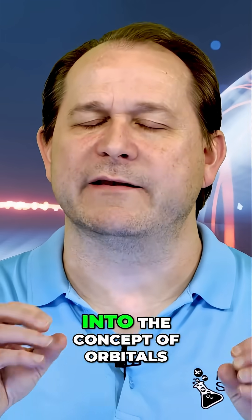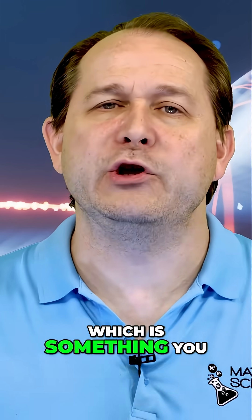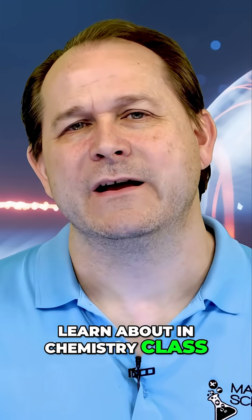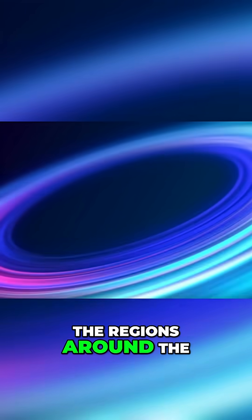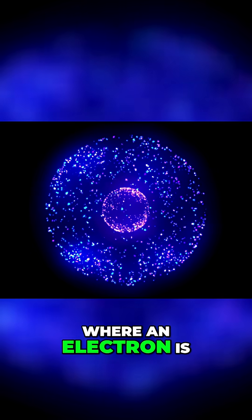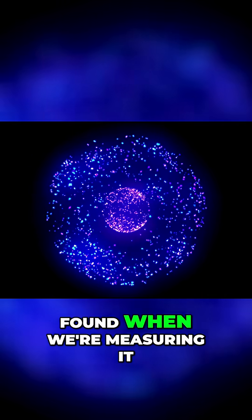I'd like to dig a little bit deeper into the concept of orbitals, which is something you learn about in chemistry class. So an orbital is just a representation of the regions around the nucleus of an atom where an electron is most likely to be found when we're measuring it.